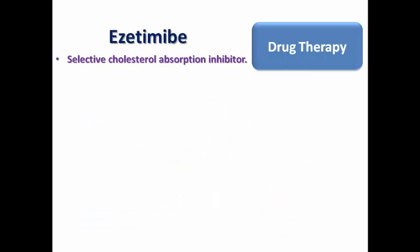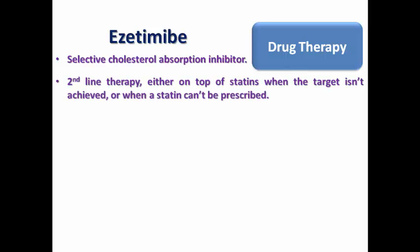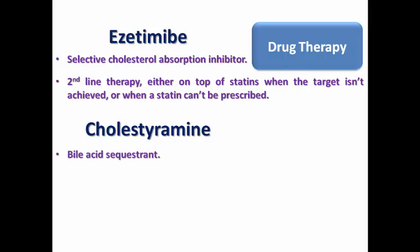Ezetimibe is a selective cholesterol absorption inhibitor that acts locally on the intestinal brush border, and is considered second-line therapy — either on top of statins when the target is not achieved by statins alone, or when a statin cannot be prescribed or tolerated. Cholestyramine is a classical medication considered a bile acid sequestrant that results in reduction of cholesterol and triglycerides, but the evidence on this medication is still limited, making it less commonly used than ezetimibe.